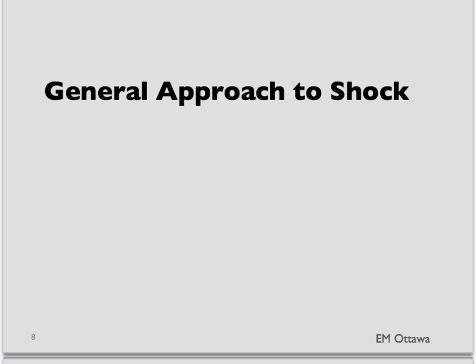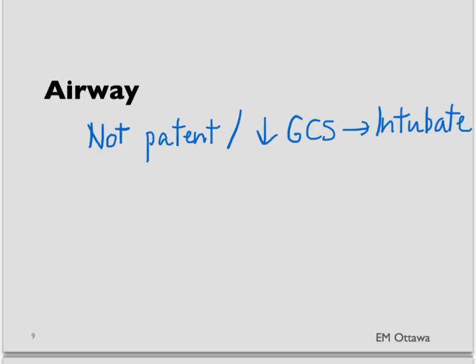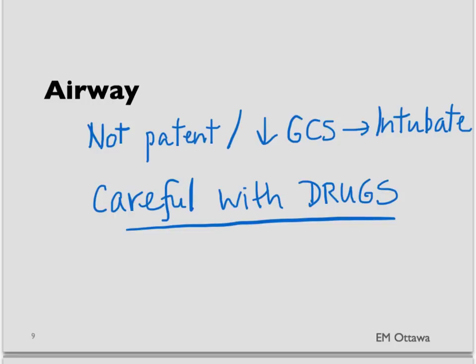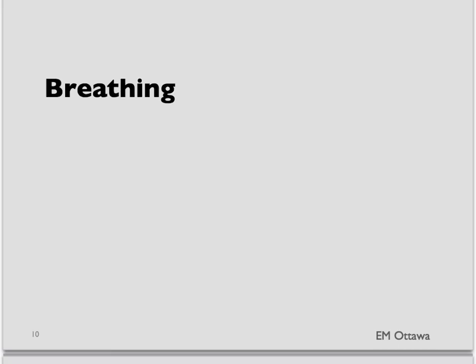What is the general approach to treating a shock patient? Like with all sick patients, the main treatment approach is ABC. First, airway — we ensure the airway is patent. If there is no patent airway or if the patient has a decreased level of consciousness, we might intubate. Keep in mind that a few medications used for intubation can cause further hypotension. Once the airway is secured, we look after breathing by giving 100% oxygen. The patient may also be placed on a ventilator if they are paralyzed and not breathing on their own.